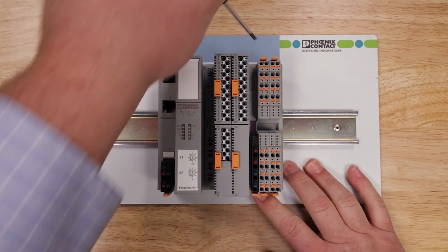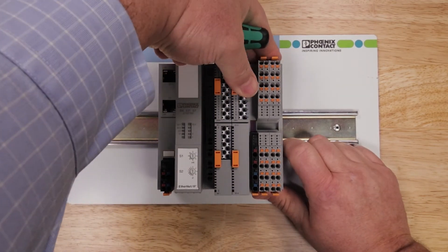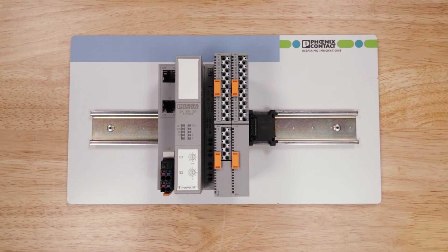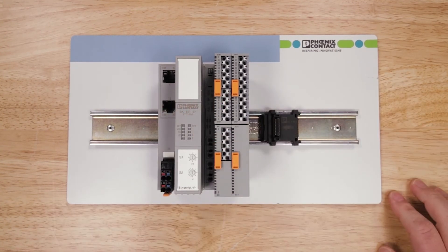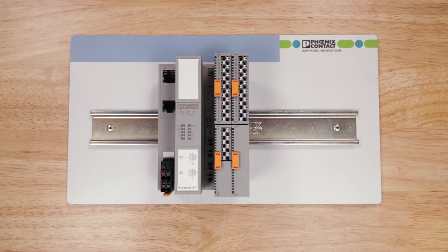Now if I want to remove it, what do I do? I need to remove the top and the bottom tabs on the Axioline module, and I can remove it. And then I can pull, and break that connection, and pull those apart, and take that off the rail.